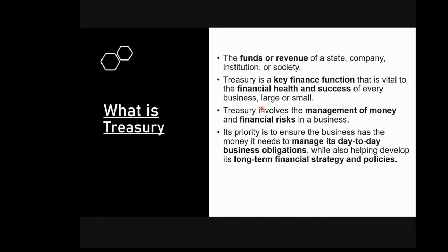Once the treasury team prepares the cash forecast, they share it with the corporate finance team — reporting the excess funding and incremental cash available. For example, if the company needs to pay for imported machinery arriving six months from now for a new product portfolio, and the money is free for those six months, why not put that money to use? This information is given by the treasury team to the corporate finance team.